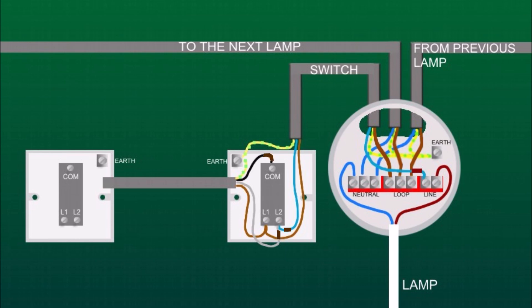At the second switch we do the same: colors to the same terminals as at the first switch. Earth wire goes to earth terminal, brown to L1, gray to L2, and the black wire goes to COM terminal.